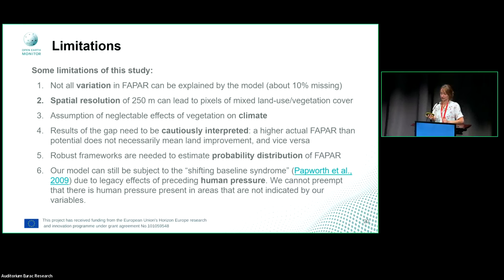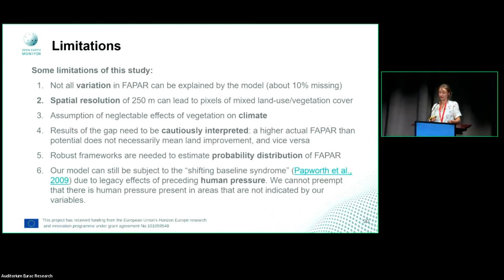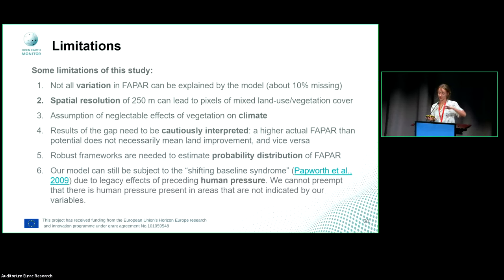Some limitations to highlight: our model did not explain all the variation in FAPAR. We used a spatial resolution of 250 meters, so there are some mixed pixels. We also neglect the effect of vegetation on the climate — if there has not been a forest and then there is one, that will change conditions. Additionally, a higher actual FAPAR than potential does not necessarily mean the land is improving, and vice versa. We need robust frameworks to estimate the probability distribution to really quantify model uncertainty. Finally, our model is also subject to the shifting baseline syndrome, since we compare spatially but cannot go back to prehistoric times with the data used in this model.